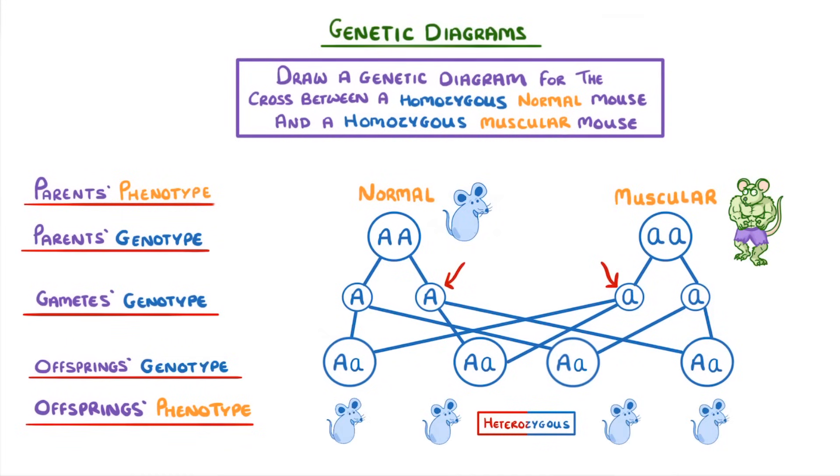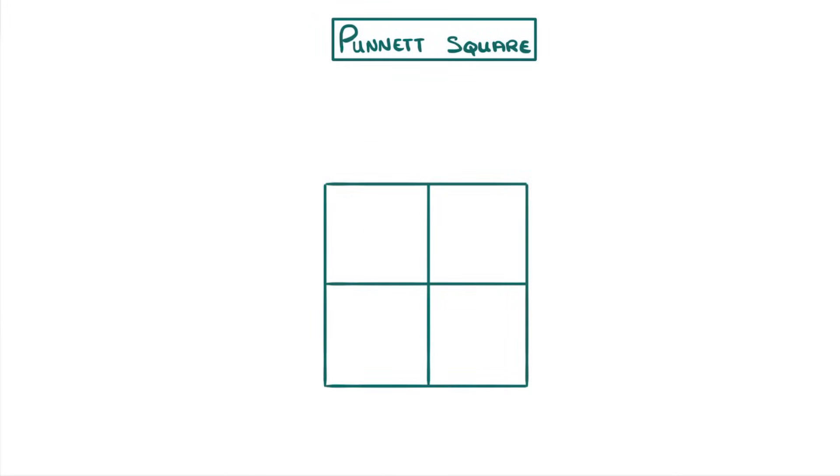We could also show this process using another type of diagram called a Punnett square, which is just a large square split into four smaller squares to give us a two by two grid. Then what we do is place one of the parent's gametes at the top and the other parent's gametes on the left, and then fill in each of the four squares depending on the combination of gametes.